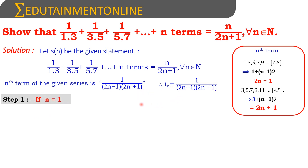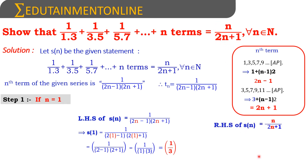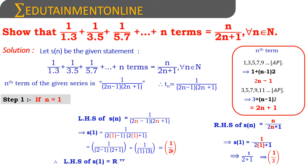Now we will prove that S(1) is true. For the LHS of S(n), substitute n=1 into the nth term: 1/[(2×1−1)(2×1+1)] = 1/(1×3) = 1/3. For the RHS, substitute n=1 into n/(2n+1): 1/(2×1+1) = 1/3. Since LHS equals RHS, S(1) is true.